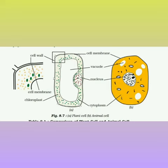Plastids, for example chloroplasts, are responsible for photosynthesis, so plants can make their own food. But in animal cells, chloroplasts are not found, and hence animal cells cannot do photosynthesis. Vacuoles are very prominent and large-sized in case of plant cells, but in animal cells vacuoles may be absent, and if present, they are small and few in number.